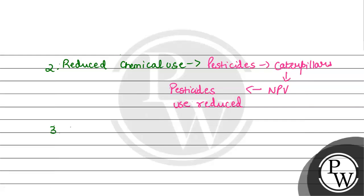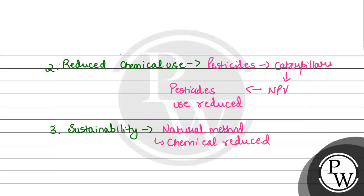The third point is sustainability. Because this is a natural way for pest management — it is a natural method. Chemical use is reduced, and NPVs do not harm crops, so the environment stays safe.